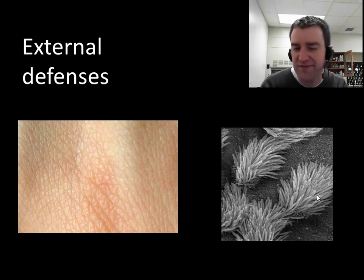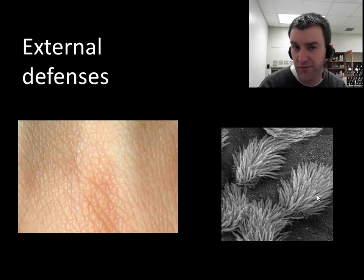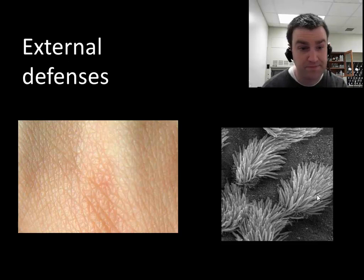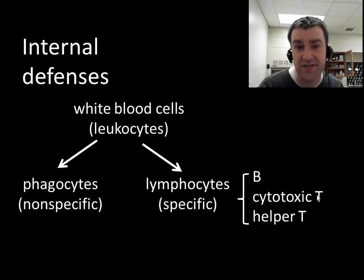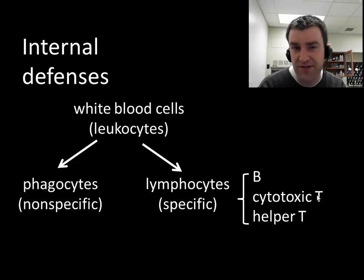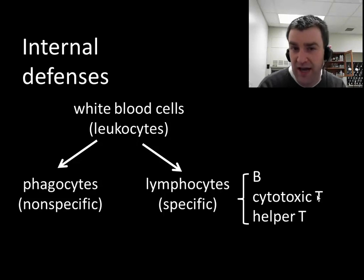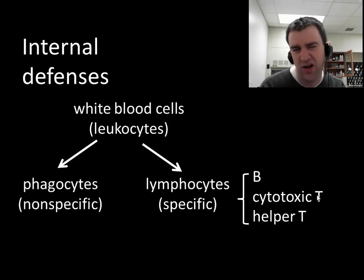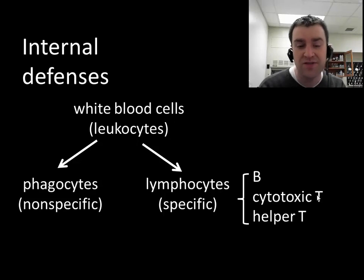So you have additional defenses. Stomach acid is another quick example — it can destroy a lot of pathogens coming through the digestive system, though not all. There are internal defenses as well, because you can imagine that pathogens would have co-evolved to find ways to slip around those external defenses, so we have additional defenses inside.